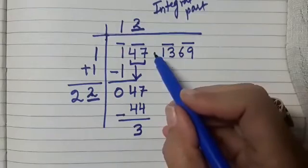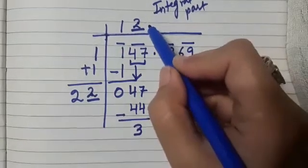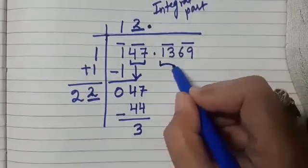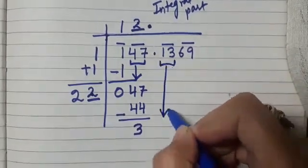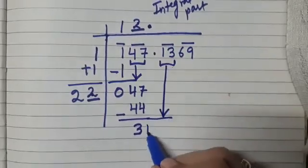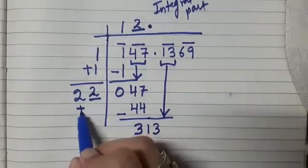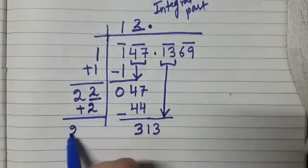Now you see here we have a decimal. So we will be putting the decimal here. And nothing else we have to do. After that bring down the next period. So that makes this 313. So 22 plus 2 is 24.